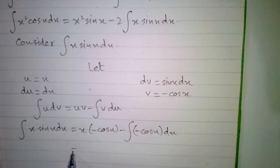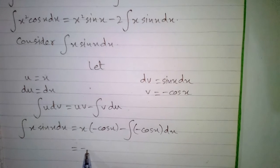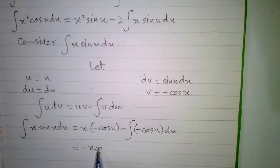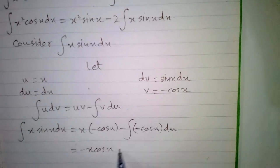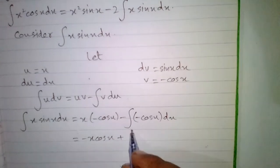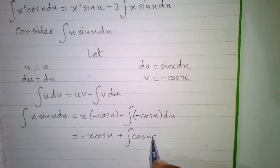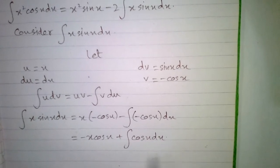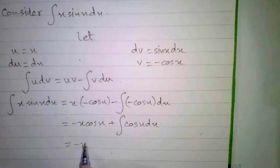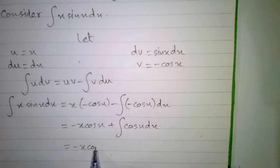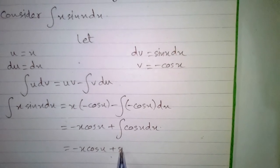After simplifying this expression using the integration by parts formula, we have minus x cos x plus the integral of cos x. The integral of cos x is sin x, so the result is minus x cos x plus sin x.